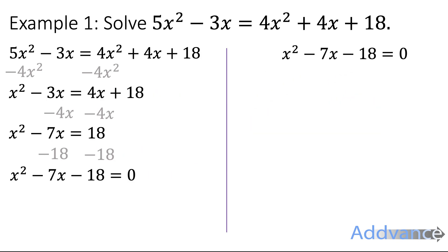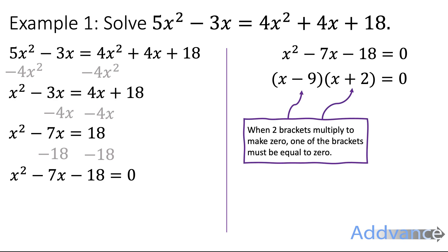Okay so we get x² - 7x - 18 = 0 and we're going to factorize it. We get (x - 9)(x + 2) = 0 and that is two things that multiply to make zero. And when you've got two things that multiply to make zero you know that one of those things must be zero. So when two brackets multiply to make zero one of the brackets must be equal to zero.